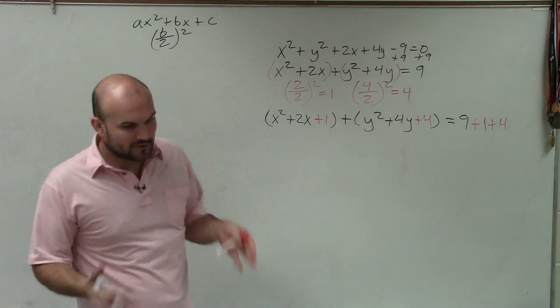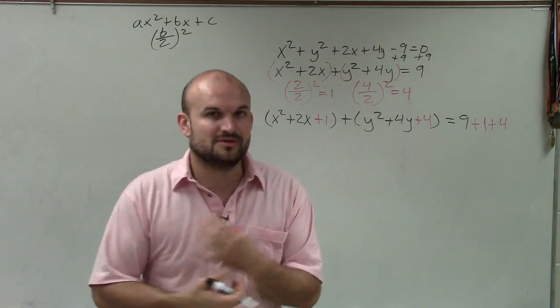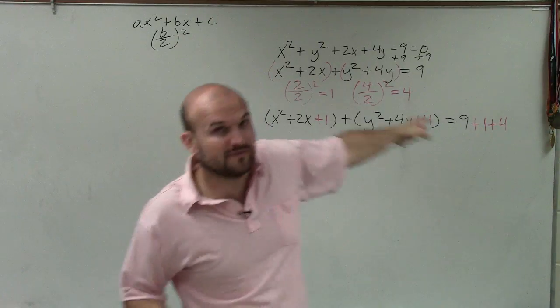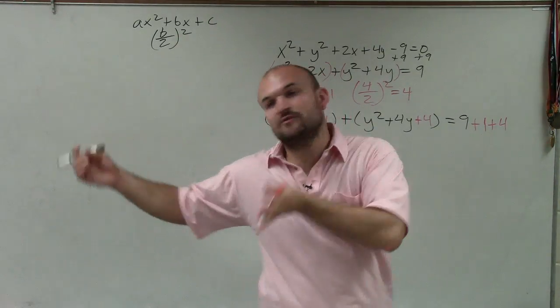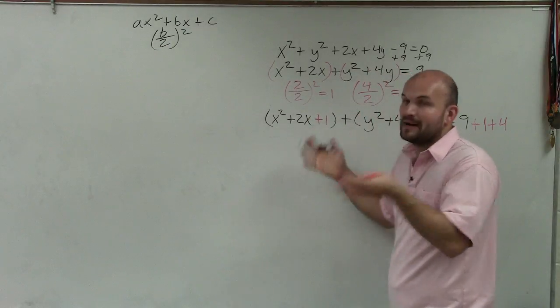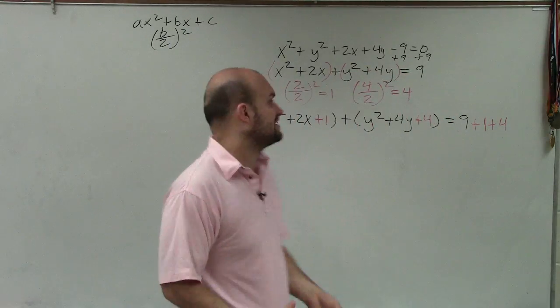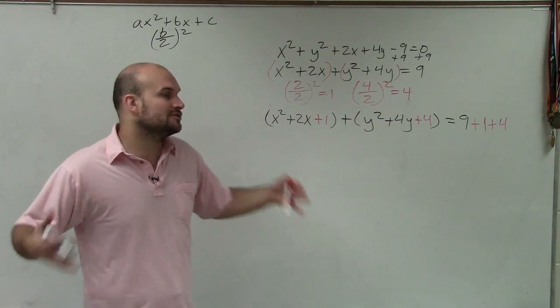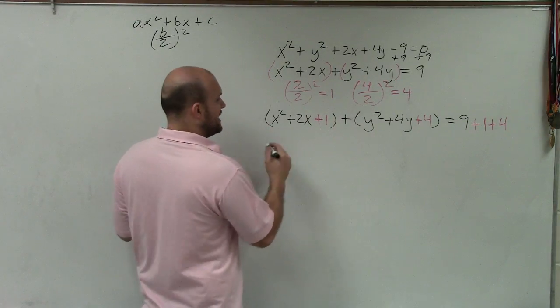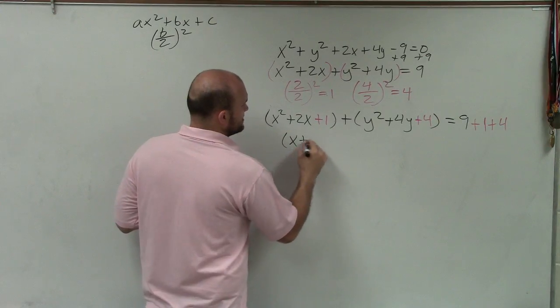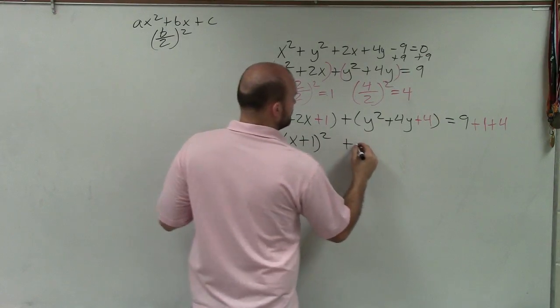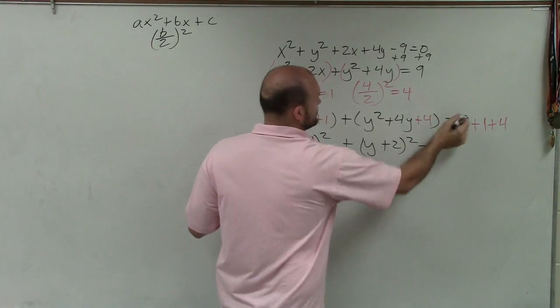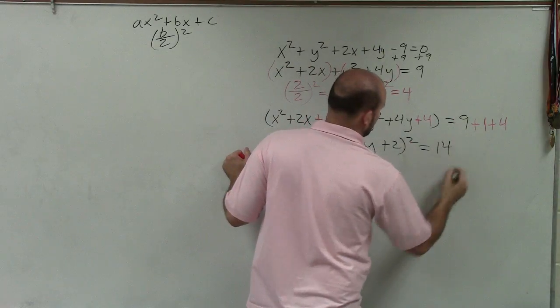So now the main important thing that's probably the most difficult about completing the square is understanding not so much how to create a perfect square trinomial, but how to go from a perfect square trinomial to a binomial squared. And that's just simply factoring. And you could factor these into two binomials if you want to. But what you'll notice is that the two binomials is just one binomial squared, which in this case is (x + 1)² + (y + 2)² = 9 + 1 is 10 plus 4 equals 14.